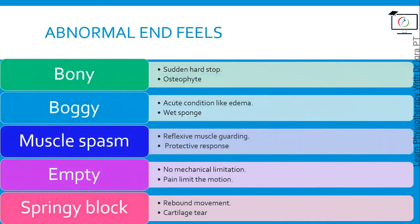In abnormal end feel you will have: abnormal bony end feel, boggy end feel, muscle spasm end feel, empty end feel, and springy block. Abnormal bony end feel is a sudden hard stop before the completion of range of motion due to some abnormal anatomical structure — for example, an osteophyte that limits range of motion. Boggy end feel occurs in acute conditions like edema and has a wet, spongy quality. Muscle spasm is a reflexive muscle guarding due to an injury at a joint or in the surrounding tissues.